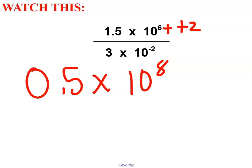Now here's where it gets tricky. 0.5 is not allowed, so I move this decimal one place higher and I move this exponent one place lower. My new number is 5 times 10 to the 7th.